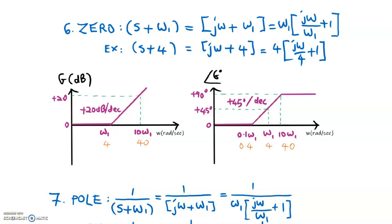We continue with Frequency Response Theory Part 2, Theory number 6 — zeros. For example, if we have a zero at s plus 4, where the zero is negative 4 at the numerator, we rearrange this equation into the frequency domain by replacing S with J omega plus 4. We rearrange into this format until we get plus 1. To achieve this, we divide J omega by 4 and multiply the function by 4. So 4 is the corner frequency. In the frequency domain, there is no negative frequency, so we use positive 4 instead.